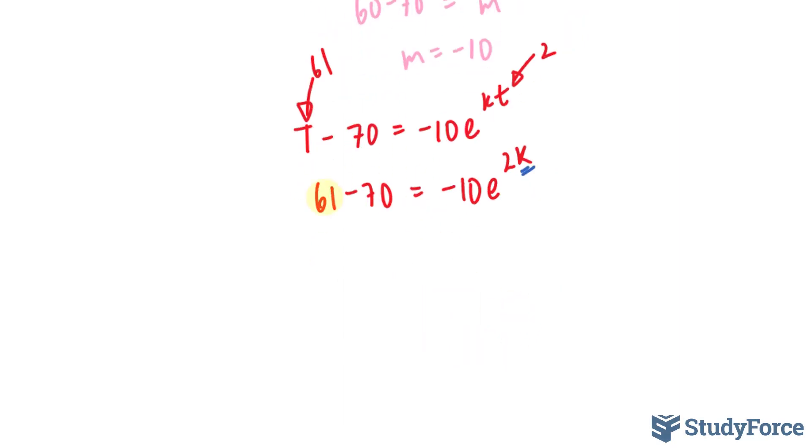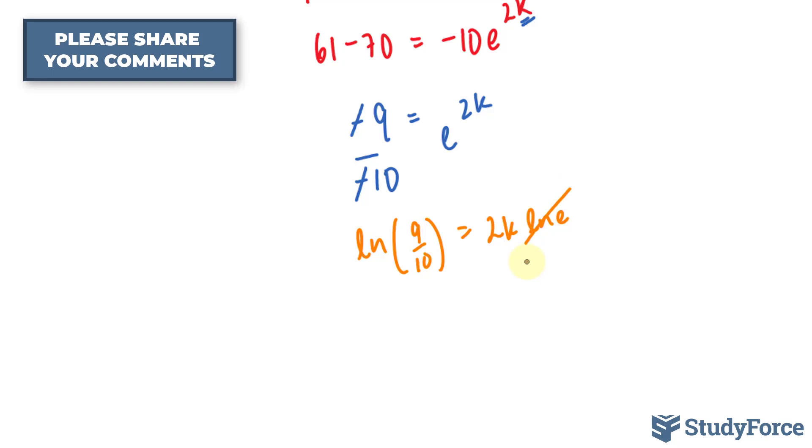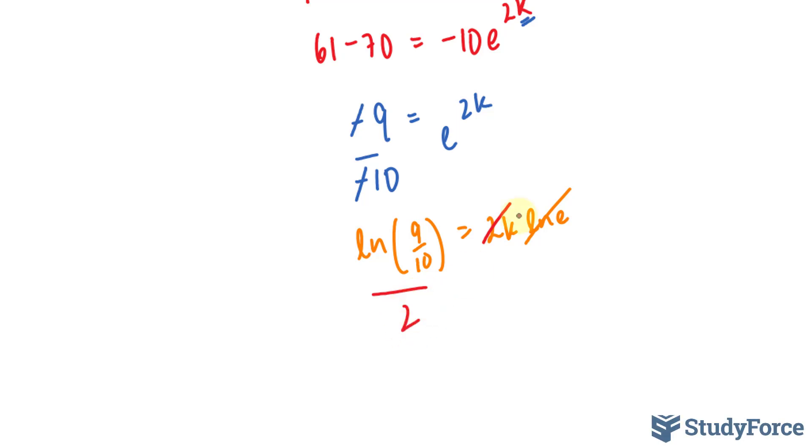61 minus 70 is equal to -10 times e^(2k). Let's solve for k. First of all, the left side becomes negative 9. And I can divide both sides by negative 10. The negatives go away, so we have 9/10 on the left side and e^(2k). To isolate for this k, I'll ln both sides, 9 over 10. And ln e^(2k) gives us 2k ln e. That becomes 1. Subsequently, dividing both sides by 2, we end up with what k is equal to.